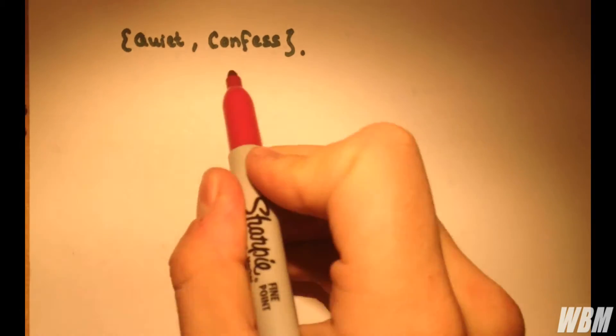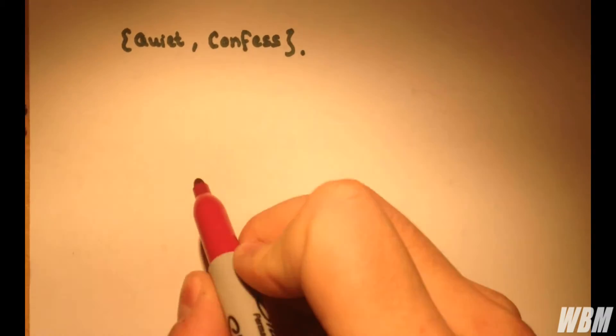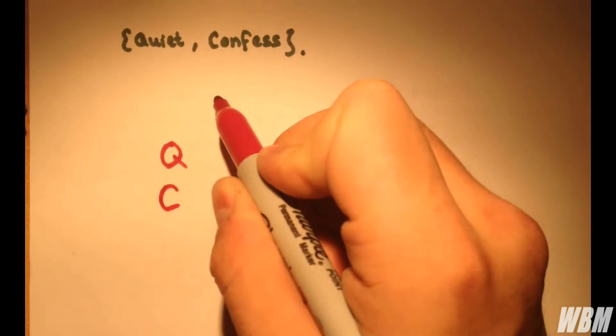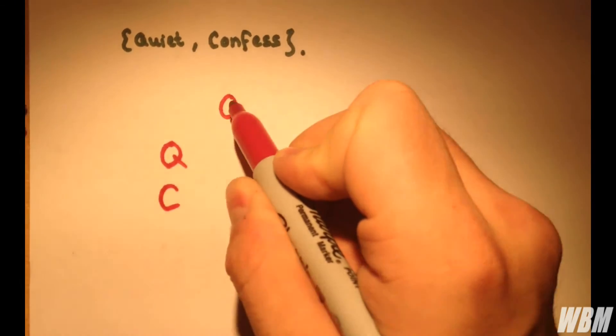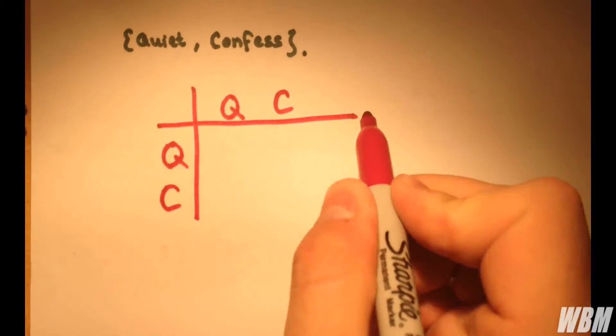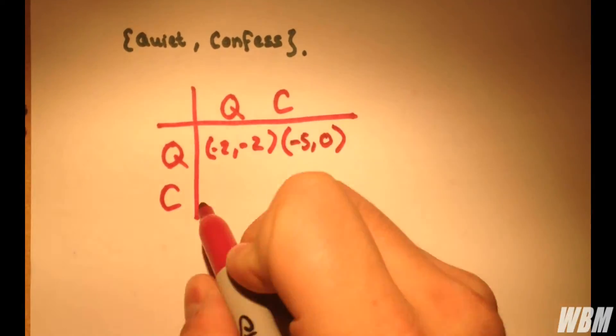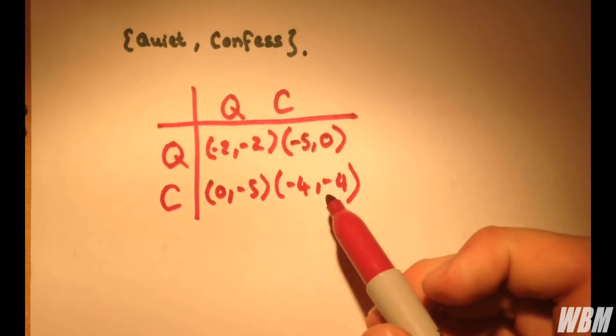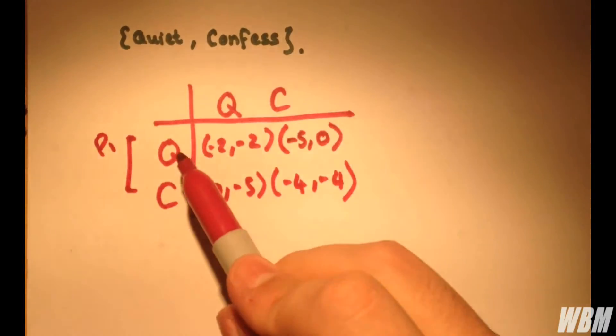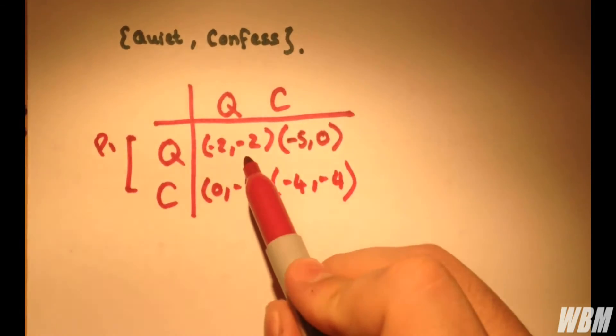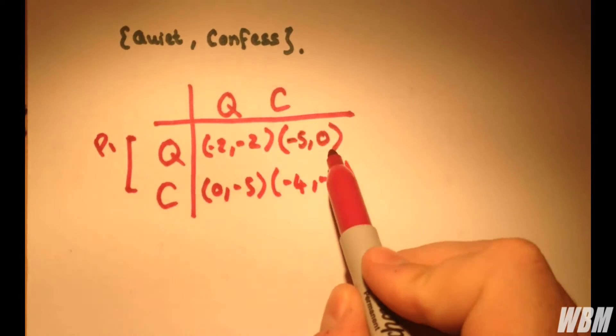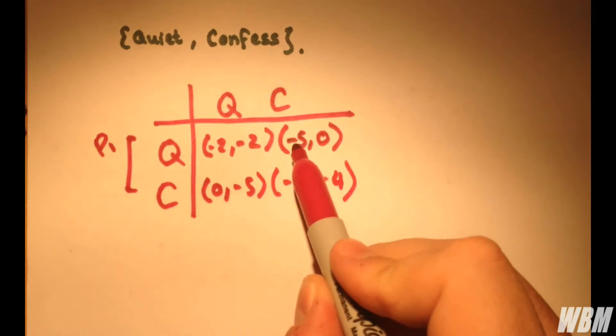So we draw ourselves a matrix. We have two options here. We're going to consider Prisoner 1, who can be quiet or confess, and Prisoner 2 here, who has the same choice. The basic outline of the Prisoner's Dilemma: Prisoner 1, P1, if he's quiet and the other fellow's quiet, they both get two years. However, if he's quiet and the other guy confesses, the other guy is let off, and Prisoner 1 gets five years.